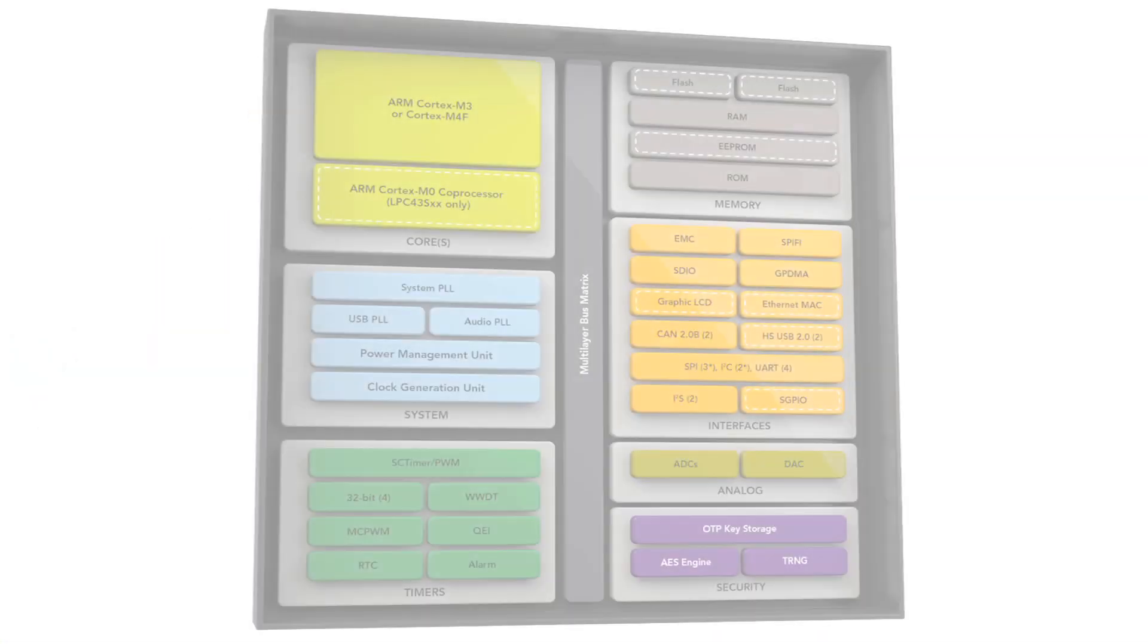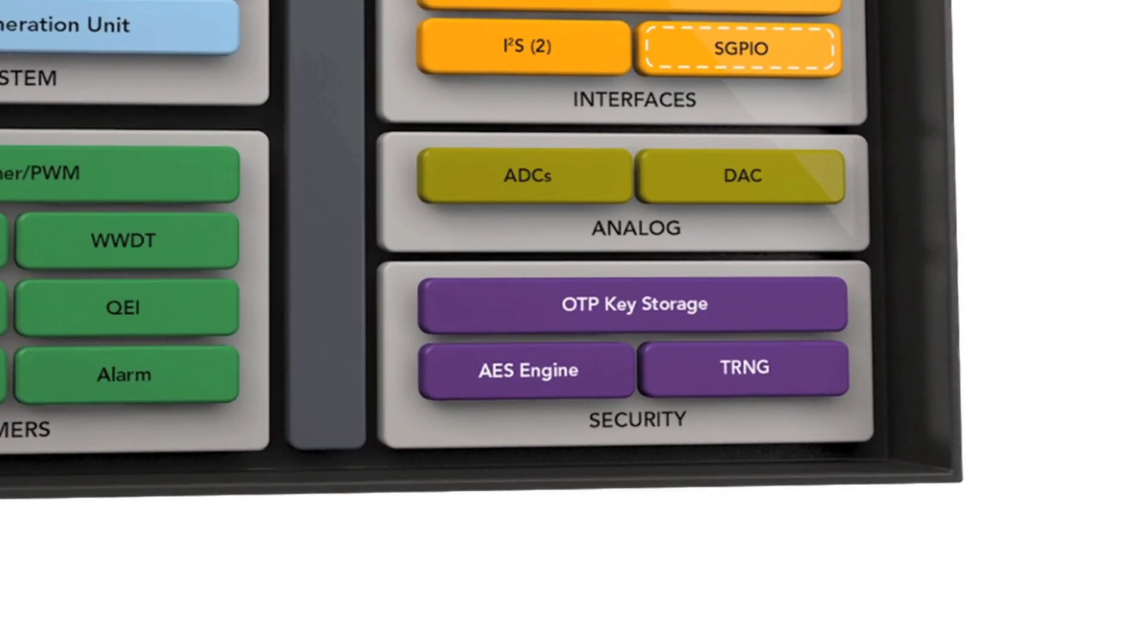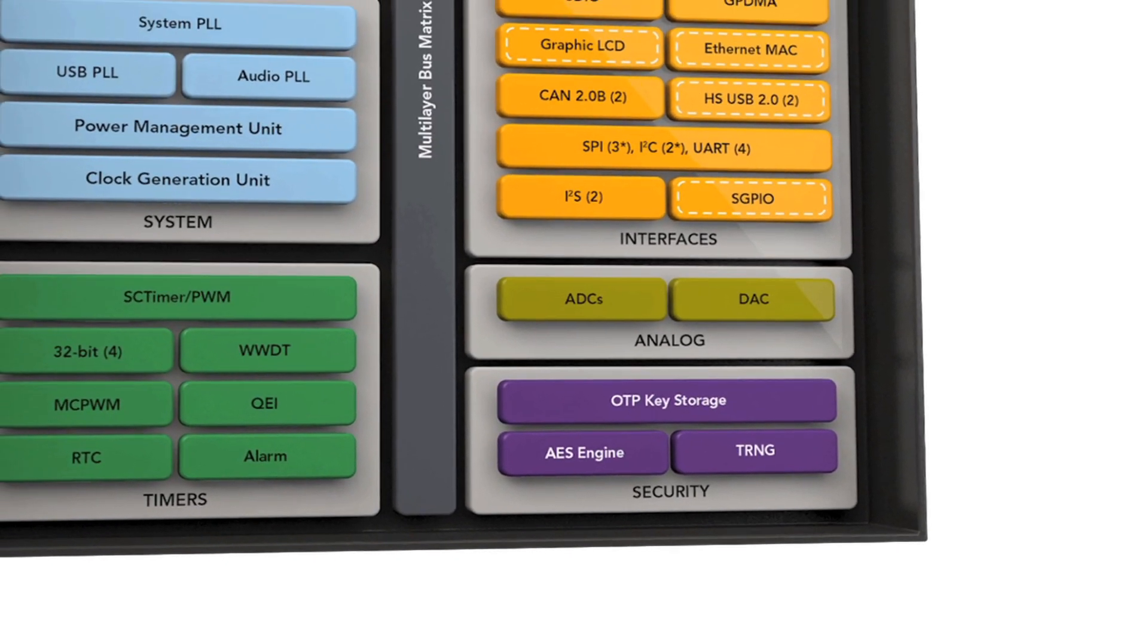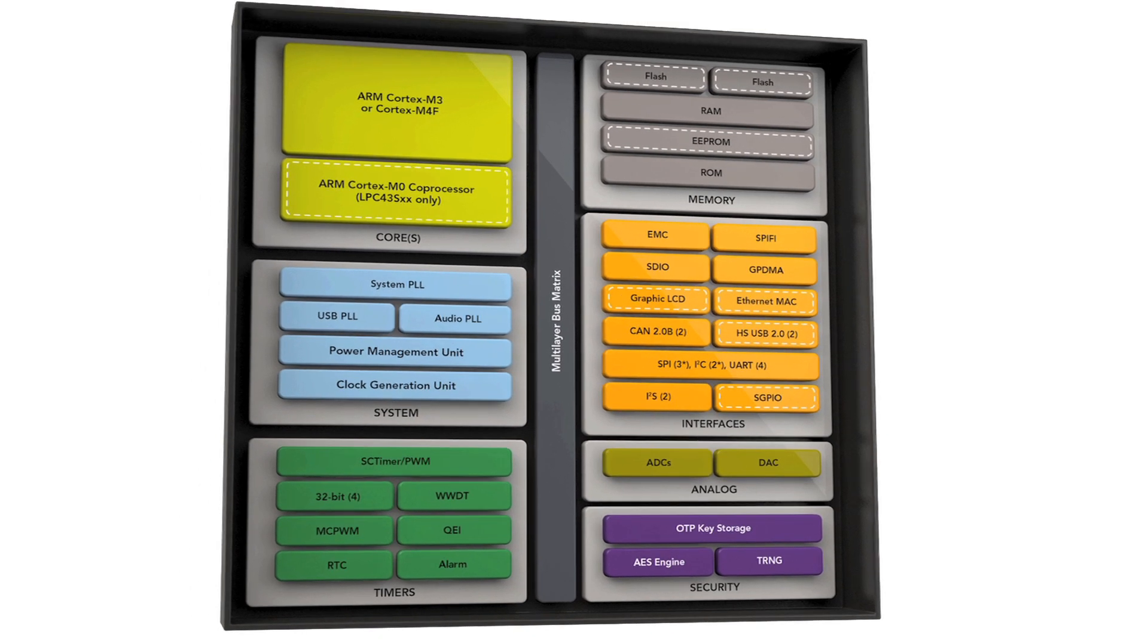Let's look at the features. The new features include an AES encryption engine, true random number generator, and one-time programmable key storage locations. These are in addition to all the other high-speed connectivity and advanced peripheral features that you have on the 1800 and 4300 parts.